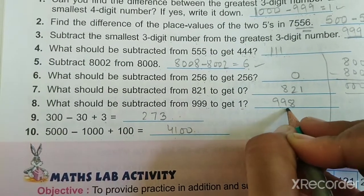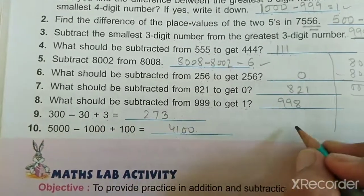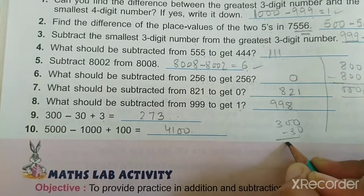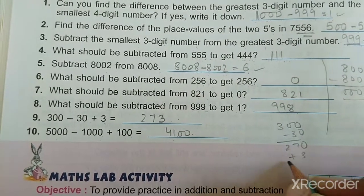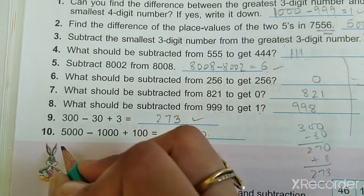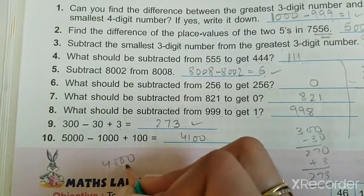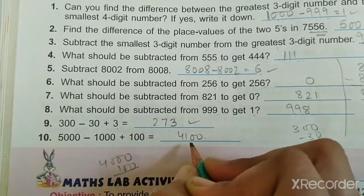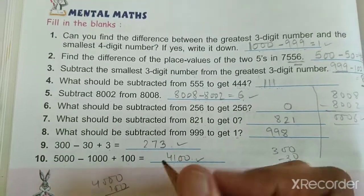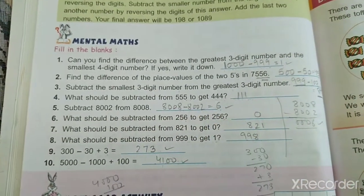We can solve this: 300 minus 30 will become 270, and 270 plus 3 will become 273. And 5000 minus 1000 will be 4000, and 4000 plus 100 will be 4100. So this was mental maths of chapter number four, very easy.